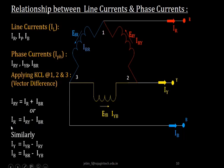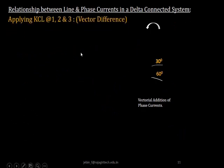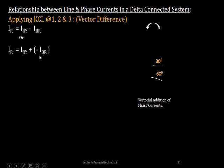Similarly, applying KCL at node 2 and node 3, we can formulate the relationships: IY = IYB − IRY, and IB = IBR − IYB. So the relationship between line and phase currents in a balanced delta connected system gives us IR = IRY − IBR, IY = IYB − IRY, and IB = IBR − IYB.